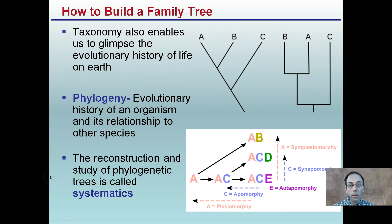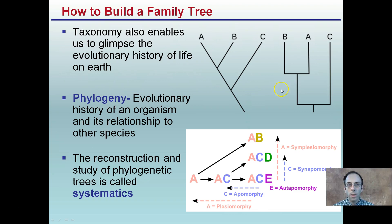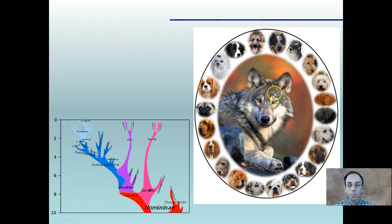We're going to be looking at one particular species and how we separate that out. We use examples of divergent evolution and how certain environments and predators have impacted changes that occur over time.